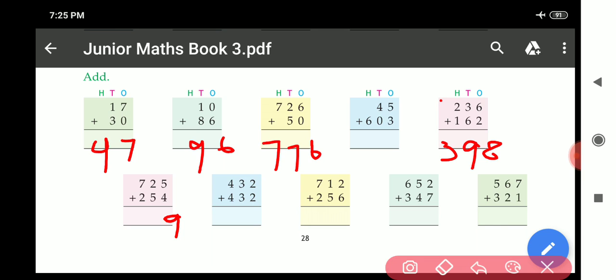5 plus 4, 9. 2 plus 5, 7. 7 plus 2, 9. Answer is 9, 7, 9.